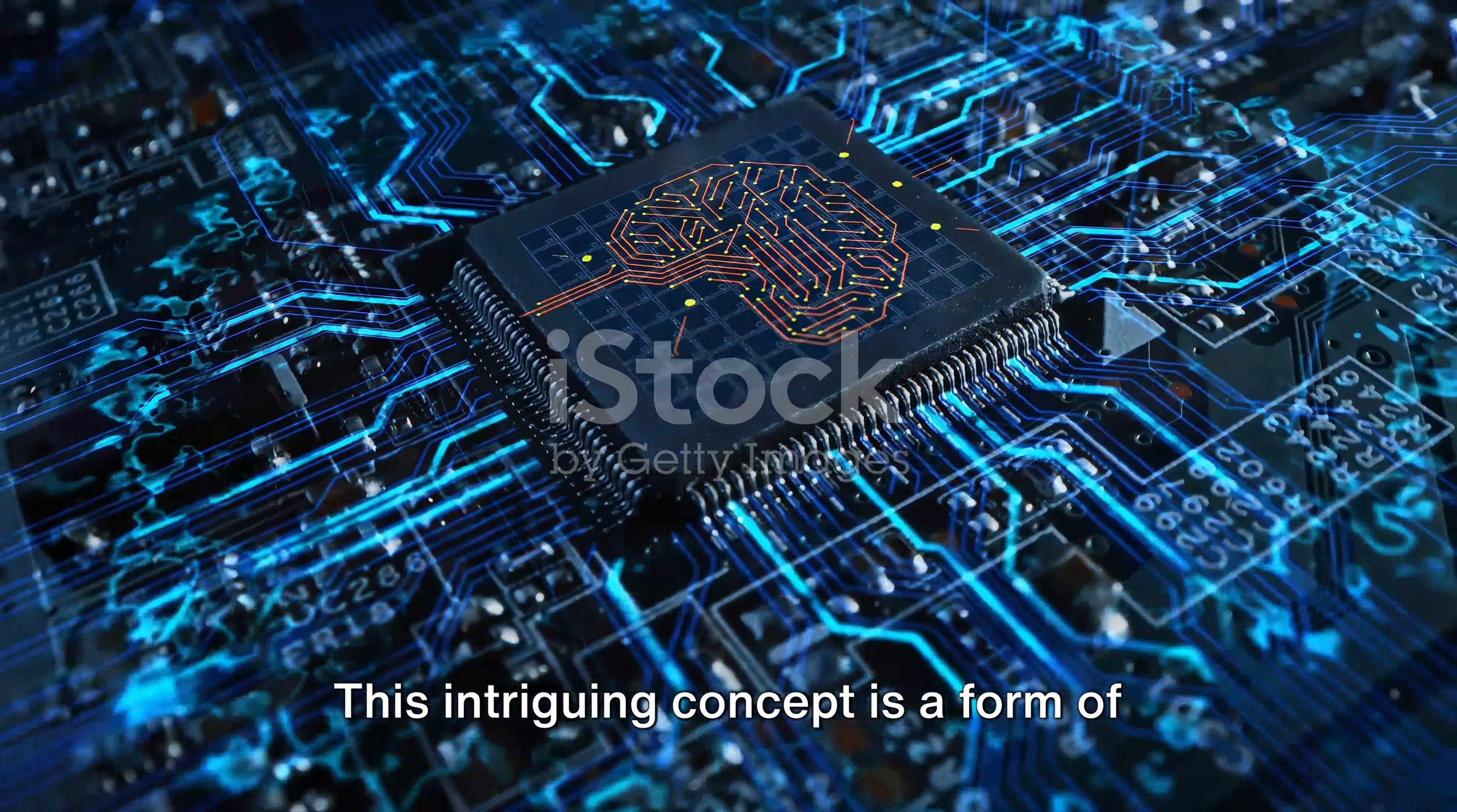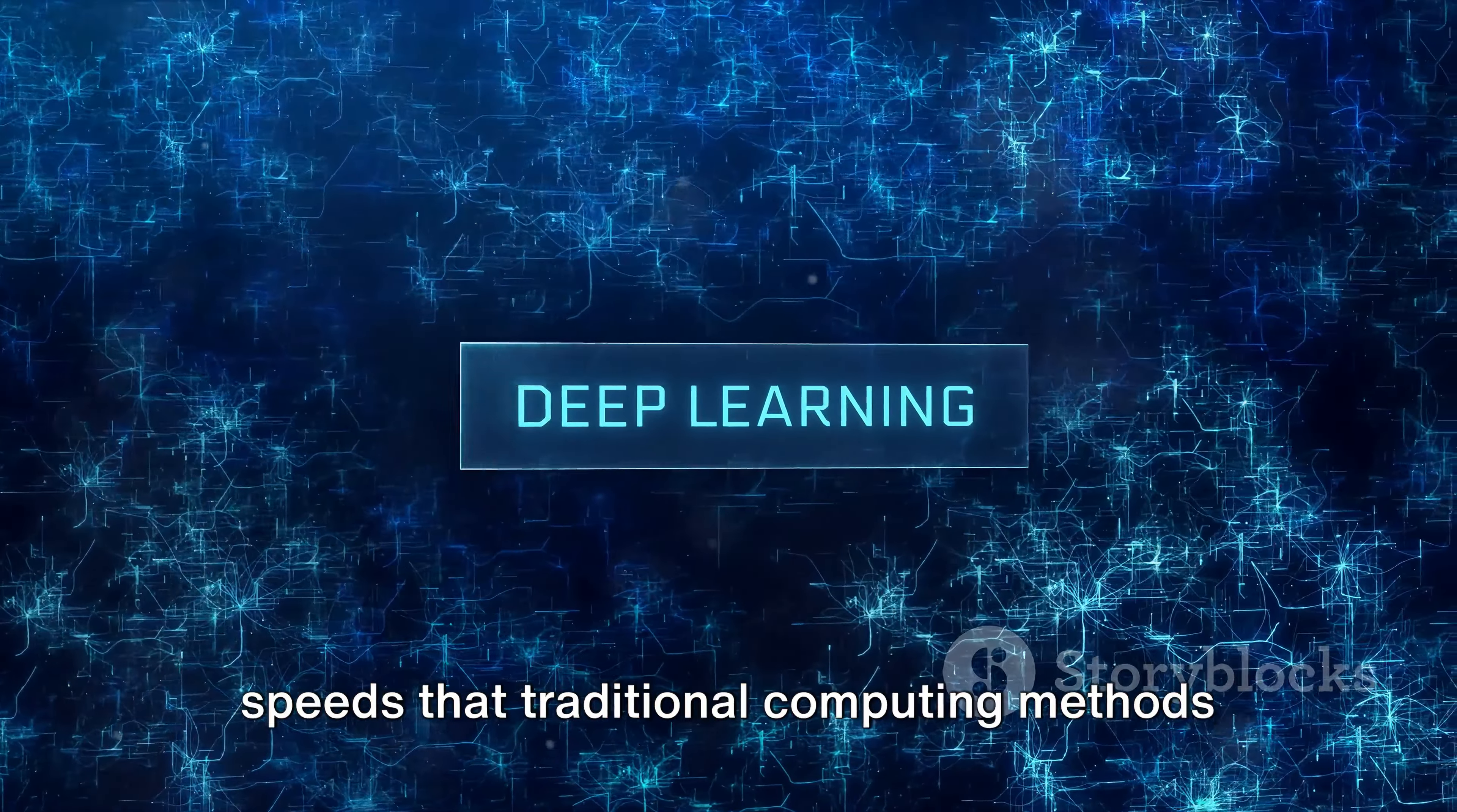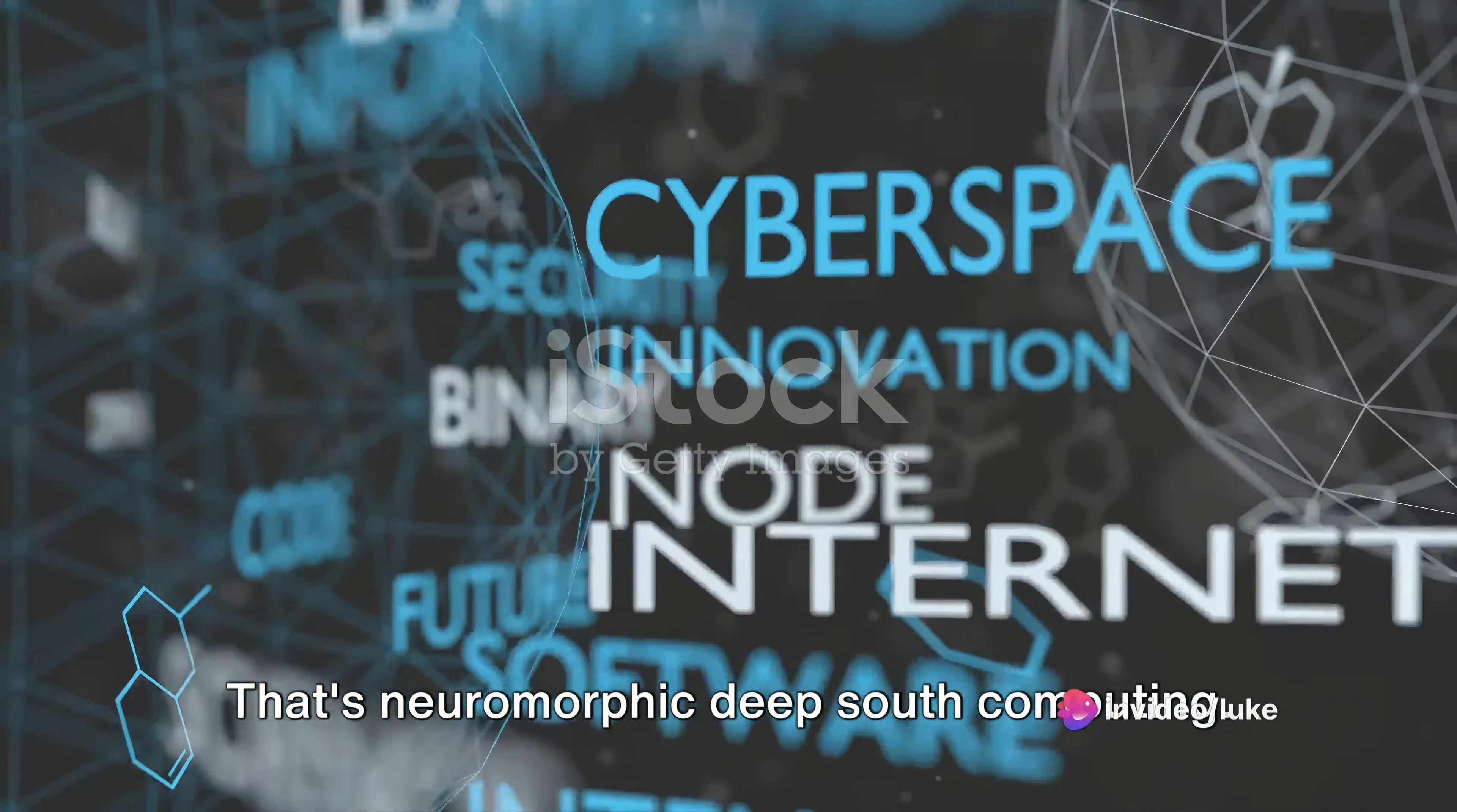This intriguing concept is a form of artificial intelligence that mimics the human brain's neural structure. It's a system that's capable of learning, adapting, and processing information at speeds that traditional computing methods simply can't match. Imagine a computer that thinks, learns, and evolves just like a human brain. That's neuromorphic Deep South computing.